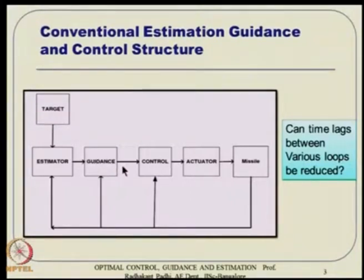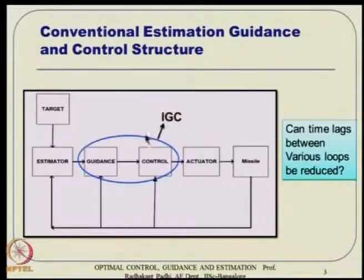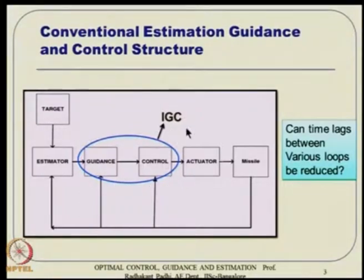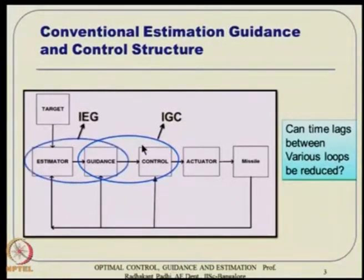That is probably not needed. People have thought about combining these two loops, and concepts of integrated guidance and control started appearing. Some people also thought about combining the estimator and guidance, because guidance essentially talks about target information all the time — so why talk about estimation and guidance separately? We can talk about them together.